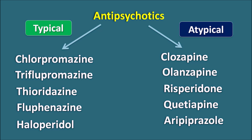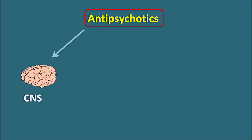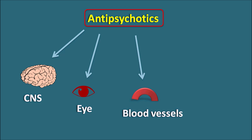Typical antipsychotics have more pronounced side effects compared with atypical antipsychotics, particularly extrapyramidal side effects. Today we'll see how to remember the side effects of antipsychotics in an easy way and how to relate these side effects with their mechanism of action. Antipsychotics are mainly acting on the CNS, so side effects are CNS-related, but they can also affect other organs like the eye, blood vessels, and endocrine glands.